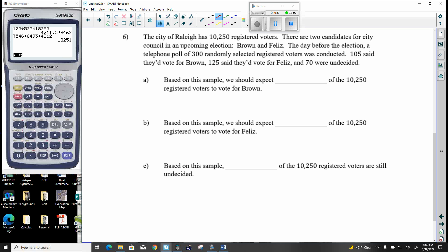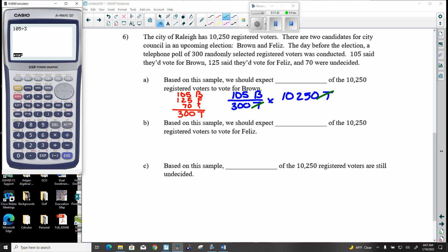Same question one more time. So we have 105 for Brown, 125 for Feliz and 70 are undecided. So 300. And then let's go to work. So we're looking for Brown. So that's 105 said Brown out of 300 total. So the total is much larger now. And so what would it be out of the 10,250?